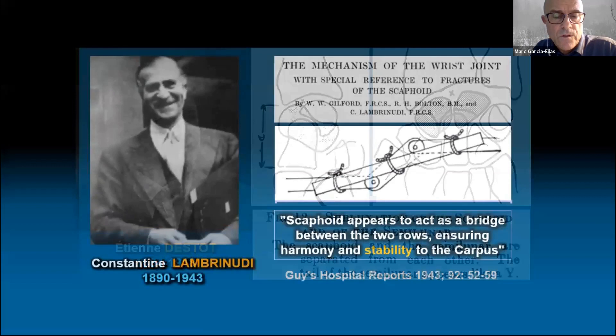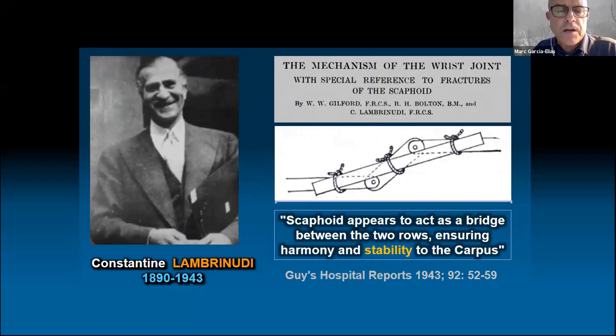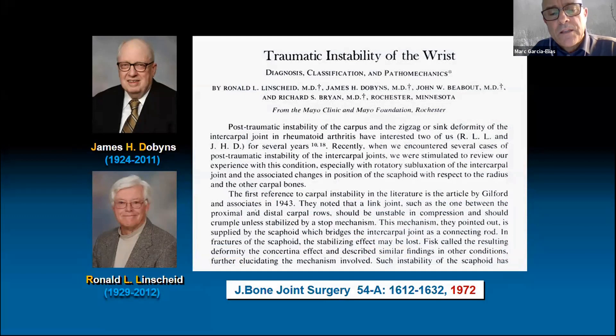The first to use the term instability referred to the wrist was Professor Constantin Lambrinudi from the Guy's Hospital in London. The scaphoid behaves, he said, like a bridge between two rows, ensuring harmony and stability to the carpus. To him, stability was only a bone-related problem — no mention was made back then about ligament ruptures. The concept of scapholunate instability related to ligament ruptures was introduced in 1972 by Dobbins and Linscheid from the Mayo Clinic.